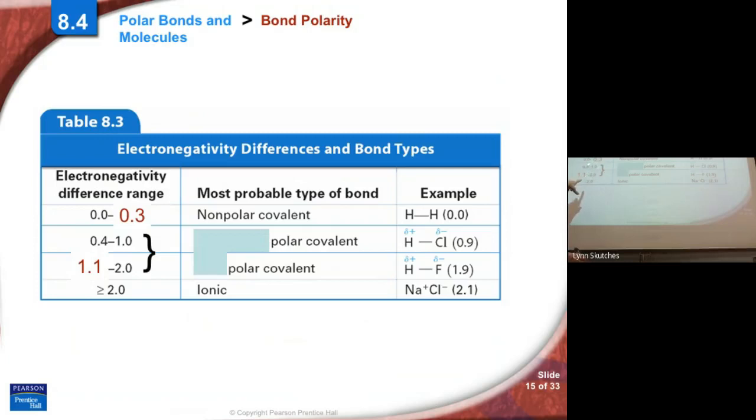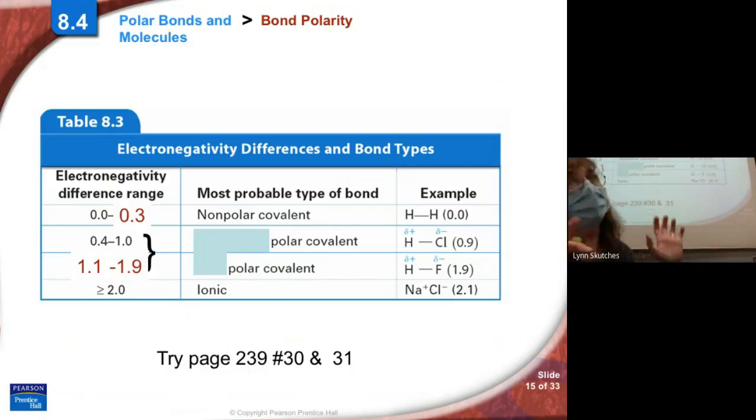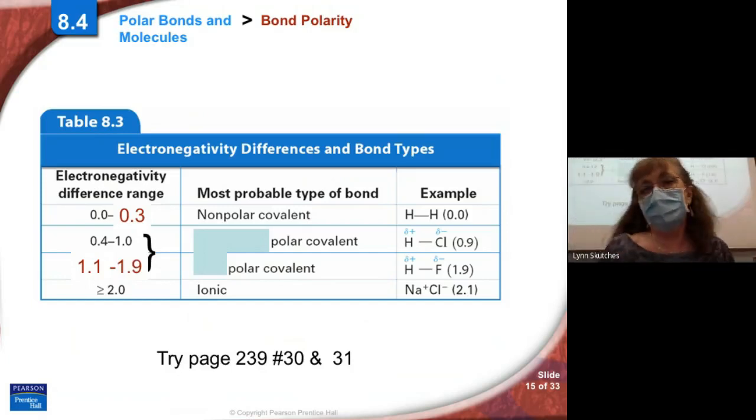And then again, this whole 0.4 to 2.0, we can't have 2.0 because that's the same as ionic. So it's going to be 0.4 to 1.9. And we're not going to worry about moderately polar covalent and very polar covalent. Just polar covalent, okay? So try to simplify it. The numbers that are on your sheet are the ones that we're going to use, okay?